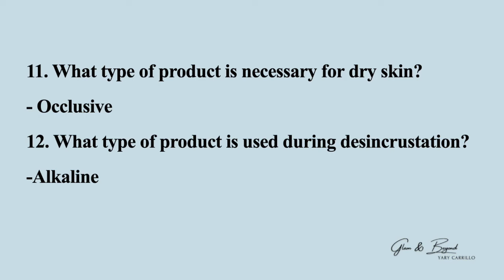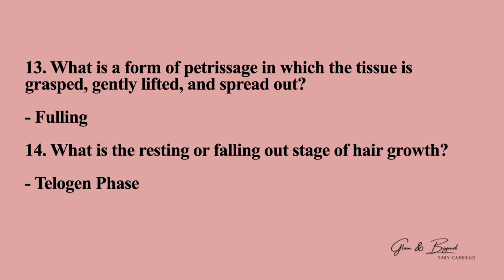Number eleven: what type of product is necessary for dry skin? The answer is occlusive. Occlusive products work great for dry skin. Number twelve: what type of product is used during disincrustation? The answer is alkaline. Number thirteen: what is a form of petrissage in which the tissue is grasped, gently lifted, and spread out? The answer is fulling.